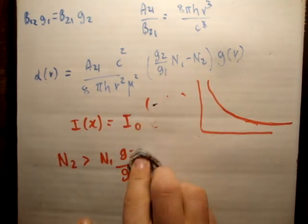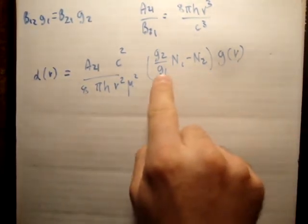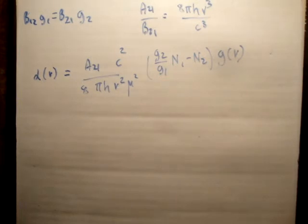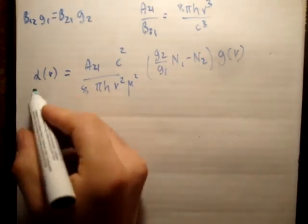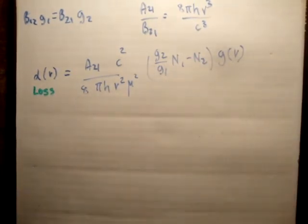So, let's say that if we somehow get n2 to be greater than g2 over g1 times n1, then what we'll have is the following. We won't have alpha anymore. This would be a kind of a loss coefficient. So, if we can invert the population.